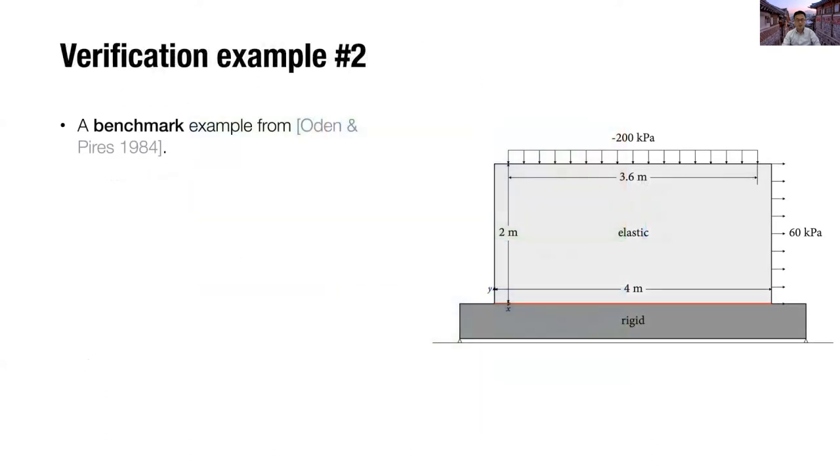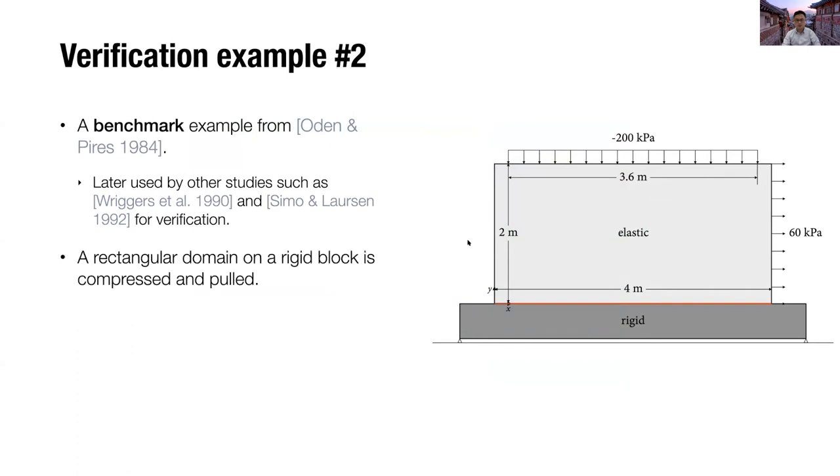Our second verification example is another benchmark example from Oden and Pires, which was later used by many other studies such as Wriggers et al. and Simo and Laursen. In this problem, a rectangular elastic domain on a rigid block is compressed and pulled. And this is an interesting problem because slip and stick contact conditions are mixed along the interface, which is denoted by red line in the figure on the right-hand side.